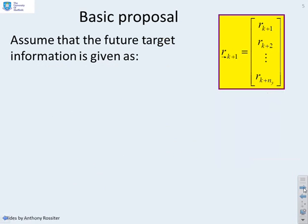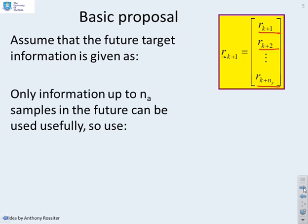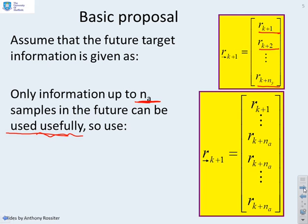Here's the basic proposal. You assume the future target information is given by this, and you'll see we've got all ny terms, rk plus 1, rk plus 2, all the way up to rk plus ny. But what we're going to say is only information up to na samples in the future can be used wisely. Instead of that, what we're going to do is assume that we know na, the future values of the target, so we've got rk plus 1 up to rk plus na. And then beyond that point, we're going to assume that the target is now fixed at rk plus na.